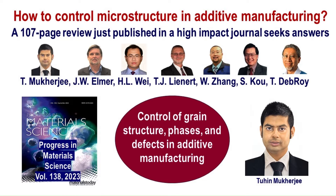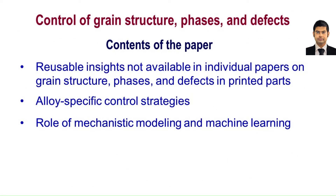— and I tried to create a roadmap to control microstructures of additively manufactured parts in a recent paper that I want to introduce to you in this video. First, I want to tell you about the content of the paper. Most importantly, we provide a compilation of reusable insights that often elude us in isolated studies on grain structure, phases, and defects in printed parts. We also provide alloy-specific microstructure control strategies. This is key to unlocking the full potential of additive manufacturing for each alloy. Our paper examines the important roles played by mechanistic modeling and machine learning in controlling the microstructures of printed metallic parts.